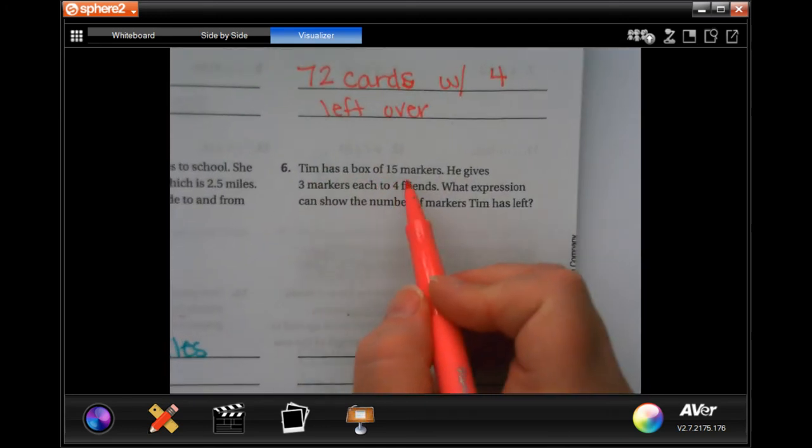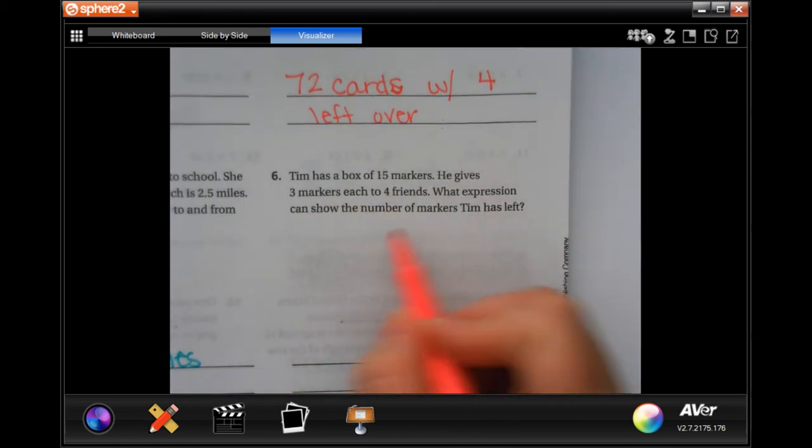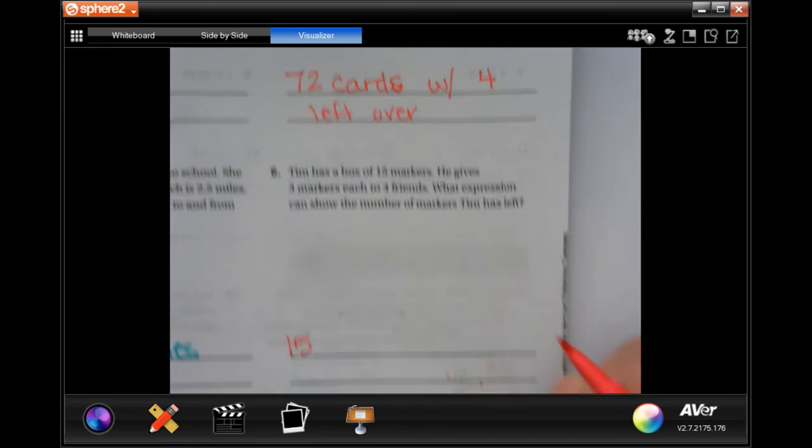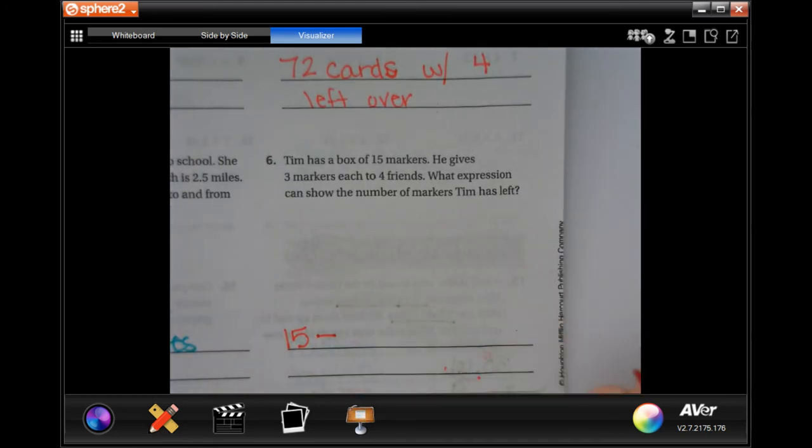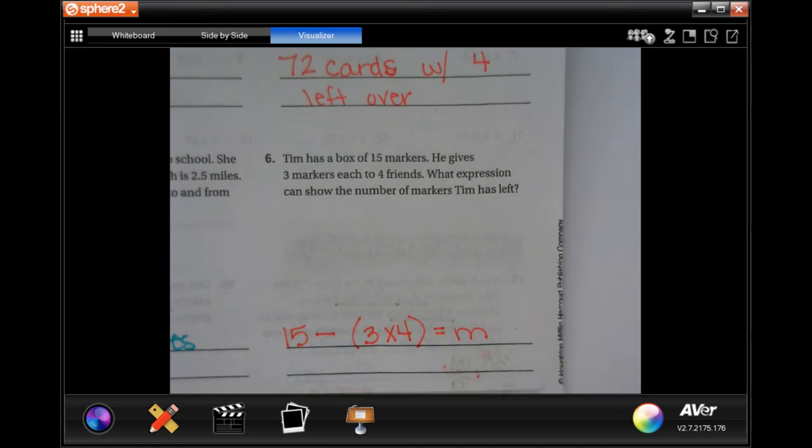Tim has a box of 15 markers. He gives three markers to each of four friends. What expression can show the number of markers Tim has left? Well, he starts with 15. He gives away, so he subtracts from his own, three markers to each of four friends. And that would tell him how many markers, which is why I put M, Tim has left. That's your expression.